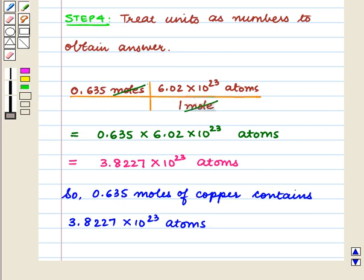So 0.635 moles of copper contains 3.8227 × 10^23 atoms, which is our required answer.